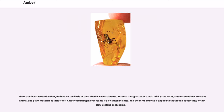There are five classes of amber, defined on the basis of their chemical constituents. Because it originates as a soft, sticky tree resin, amber sometimes contains animal and plant material as inclusions. Amber occurring in coal seams is also called resinite, and the term ambrite is applied to that found specifically within New Zealand coal seams.